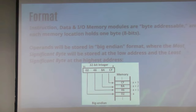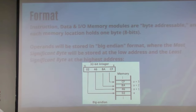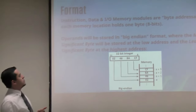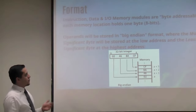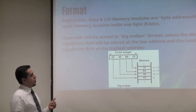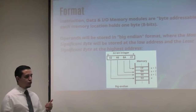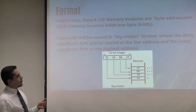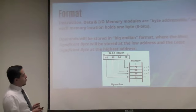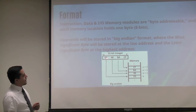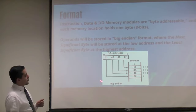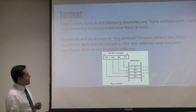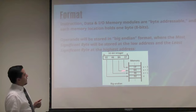The instruction, data, and IO memory modules are byte addressable, and each memory location holds one byte. Operands are stored in big-endian format where the most significant byte is stored at the lowest address, and the least significant at the highest address.